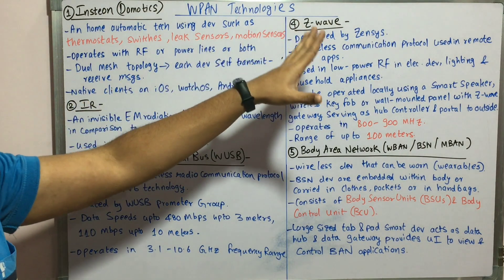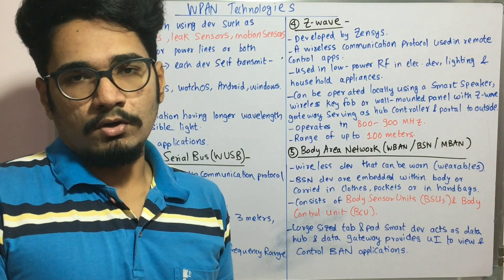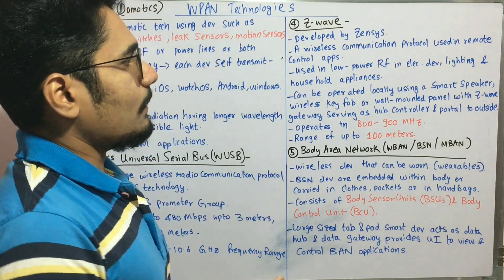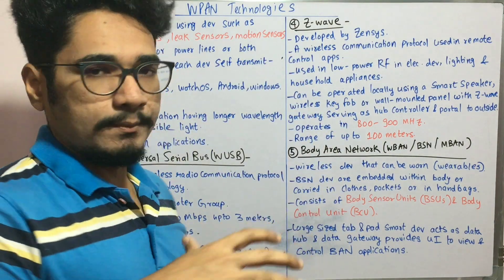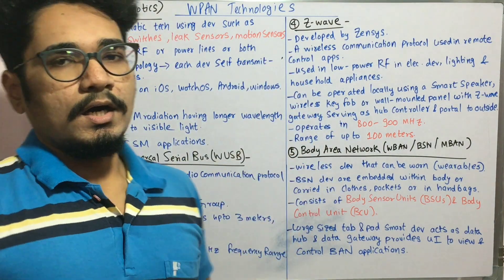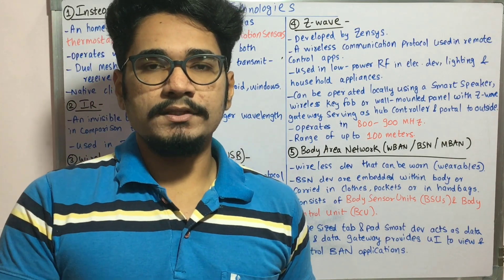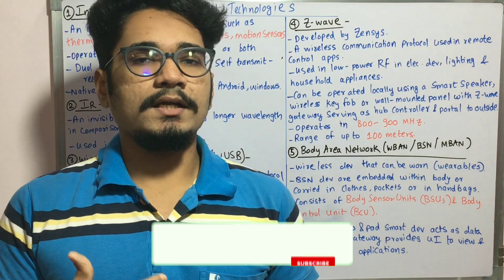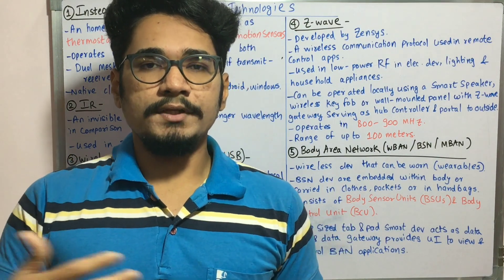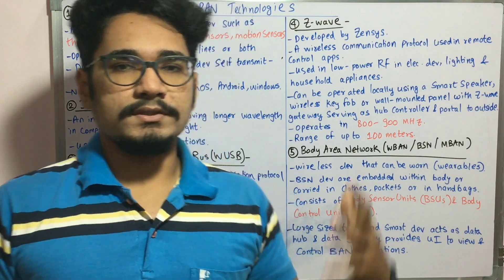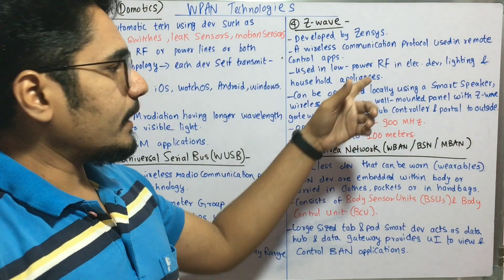Next, we move on to the fourth kind of technology, Z-Wave. It's developed by the Zensys group and it's a wireless communication protocol used mainly in remote control applications. In your home, you have various devices enabled with infrared blaster. In your TV setup, if you want remote access, you make use of this Z-Wave technology using low-power radio frequency.